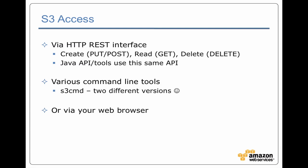The way that S3 handles access to data is based on HTTP RESTful requests. If you want to create something, you're doing a PUT or a POST. If you're reading data, you're doing a GET. And if you're deleting data, you're doing a DELETE. There's a Java API as well as a bunch of tools that all interact with S3 using the same API. Some of these tools you'll find out about later in this class are command line tools — for example, there's S3 command.